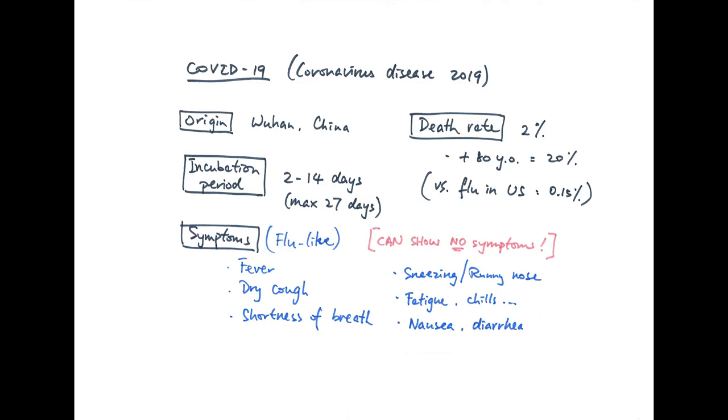The death rate is even higher, at around 15 to 20 percent for anyone above the age of 80. Compared to the death rate of flu in the states, which is about 0.15 percent, you can really see the seriousness of COVID-19.